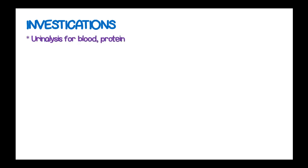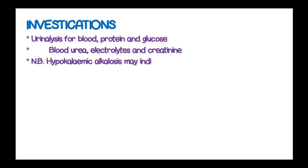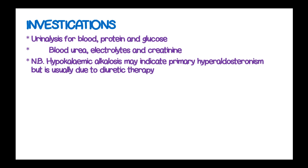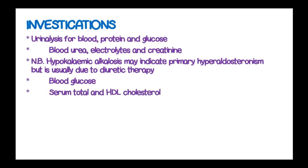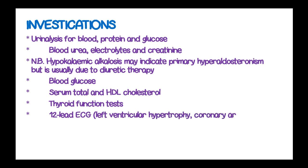The investigations done are to diagnose and identify the underlying cause of hypertension, such as urinalysis for blood, protein and glucose; blood urea, electrolytes and creatinine. Hypokalemic alkalosis may indicate primary hyperaldosteronism but is usually due to diuretic therapy. Blood glucose levels, serum total and high-density lipoprotein cholesterol, thyroid function tests, and a 12-lead electrocardiogram are also performed.